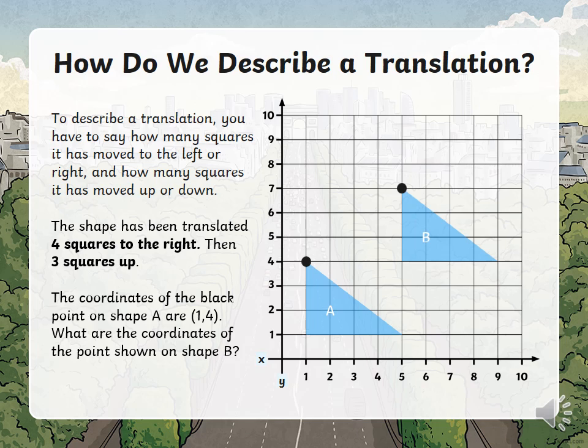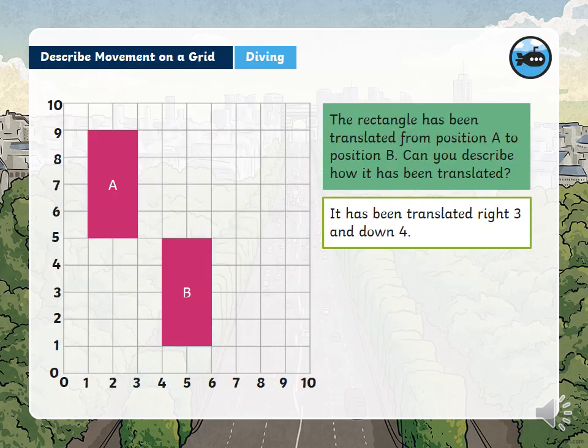Remember, we need to find a corner to hold it and drag it by, and then it goes three squares up. The coordinates of the black point on shape A are (1, 4). What are the coordinates of the point shown on shape B? (5, 7).